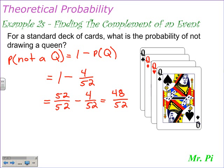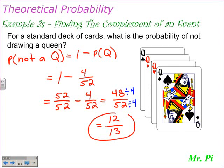Like the other examples, we need to reduce or simplify the fraction. Both of these numbers are divisible by 4: 48 divided by 4 gives 12, and 52 divided by 4 gives 13. So the probability of not drawing a queen is 12 over 13, or 12 out of 13. You've got 12 chances out of 13 of not drawing a queen.